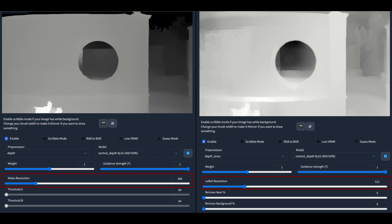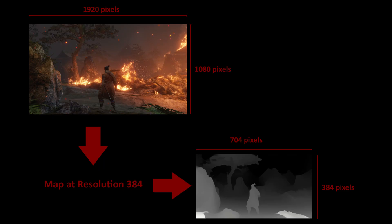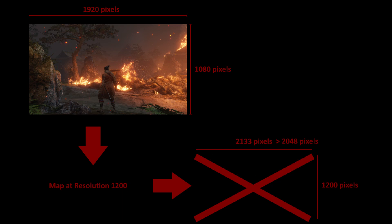Both preprocessors have a slider for map resolution. The resolution here will be applied to the shorter of the two dimensions of the image being mapped. For example, if you take a standard 1920x1080 image and map with a resolution of 384, the height of the map will be 384 pixels and the width will be 704 pixels. The maximum size of either dimension of the map must be less than 2048 or else you'll get an error. For example, if you tried to map that same image with a resolution of 1200 pixels, you would get an error because the width would be 2133, which is greater than 2048.